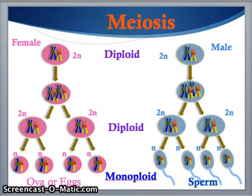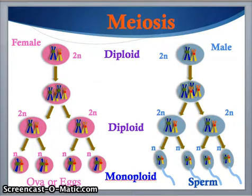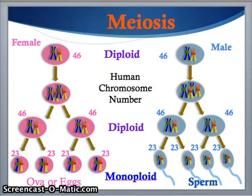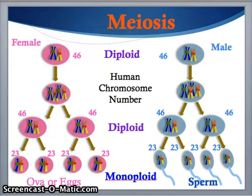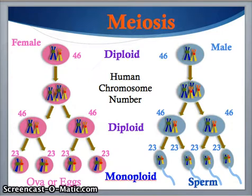During meiosis, each original cell ends up producing four sperm, and each original cell of a female ends up producing four eggs or ova. So we went from 46, split the first time back to 46, and then split a second time to 23. The monoploid number of chromosomes in sperm and egg is 23, which allows the sperm and egg to join and form a zygote — those two sets of 23 create the 46 chromosomes of a new human.